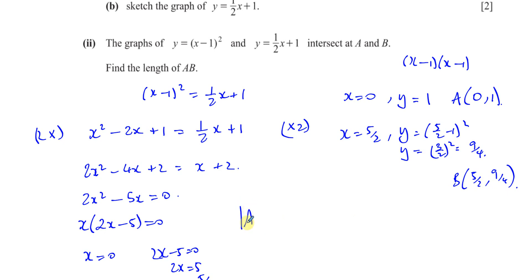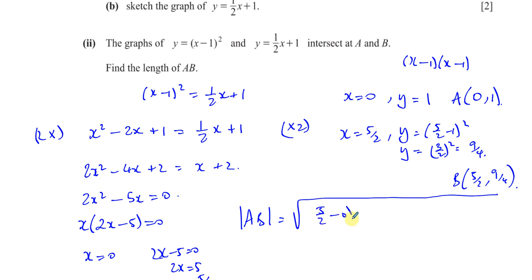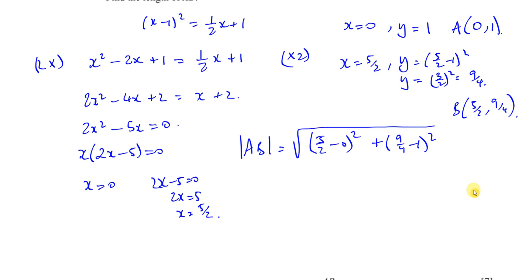We want to find the length of AB using the distance formula: the square root of the difference between x-coordinates squared, plus the difference between y-coordinates squared. That's the square root of (5/2 minus 0) squared plus (9/4 minus 1) squared. The second part: 9/4 minus 1 is 9/4 minus 4/4, which is 5/4. So we have the square root of 25/4 plus 25/16.